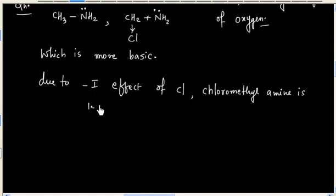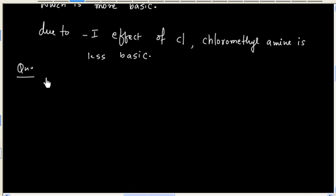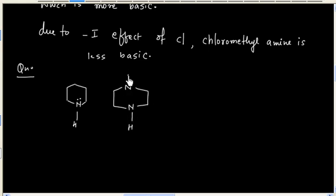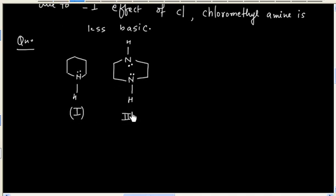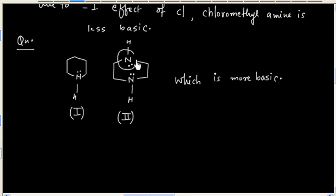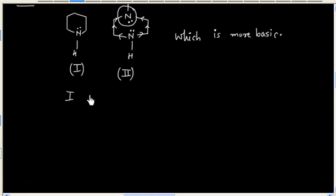Now let us consider two molecules — call them 1 and 2. Which is more basic? Once again the answer is the same: in molecule 2, this nitrogen shows a minus-I effect, so the electron cloud of that nitrogen gets dispersed and the lone pair is not available for donation. So molecule 2 is less basic, and molecule 1 is more basic.